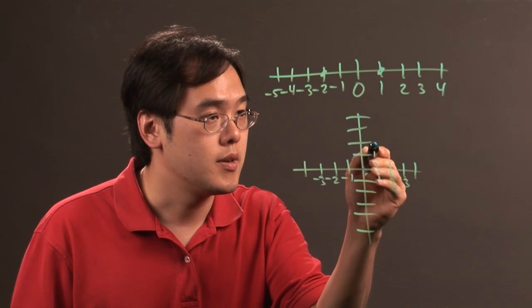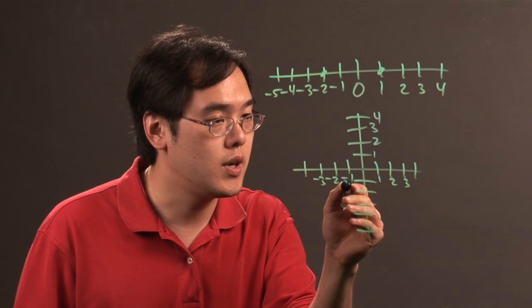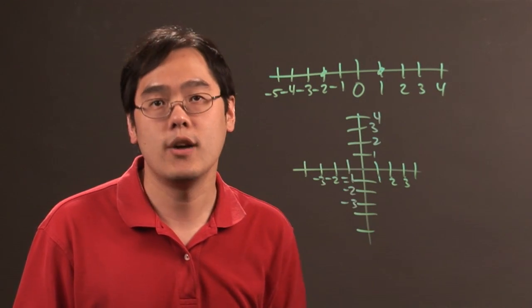And on the y axis, one, two, three, four up like so, and then negative one, negative two, negative three, going on down.